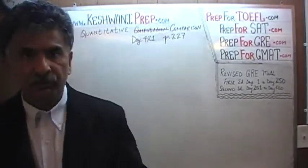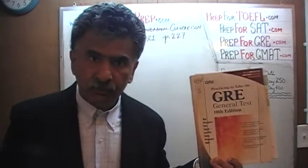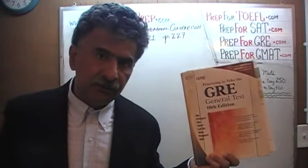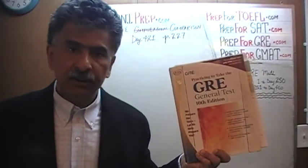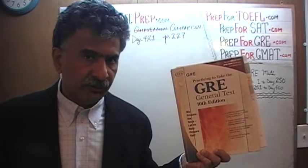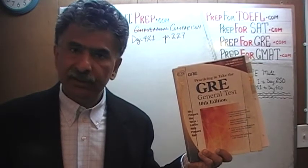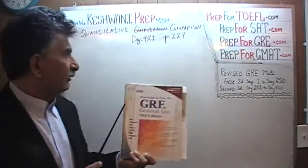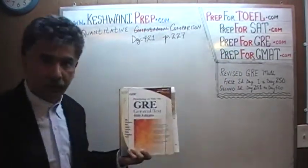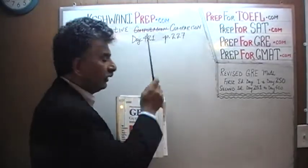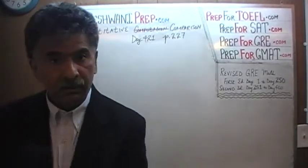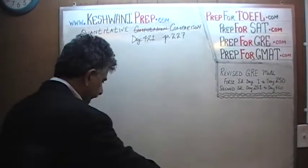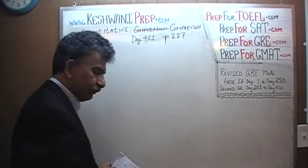Right now, we are in the process of solving quantitative comparison questions out of this book — the 10th edition of the General GRE — because the first and second editions of the revised GRE simply do not contain enough quantitative comparison questions to get extra practice. We started solving from day number 401, and right now we are on page number 227. Please turn to it — page 227, the very first problem, problem number 1.